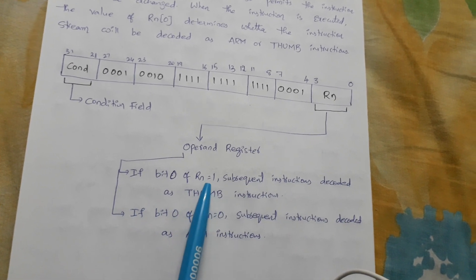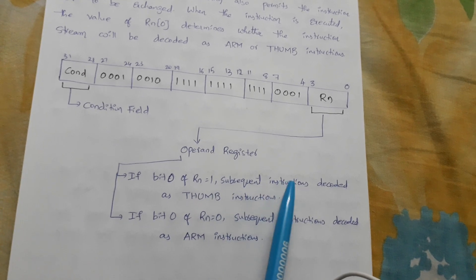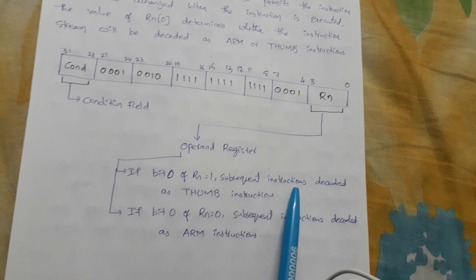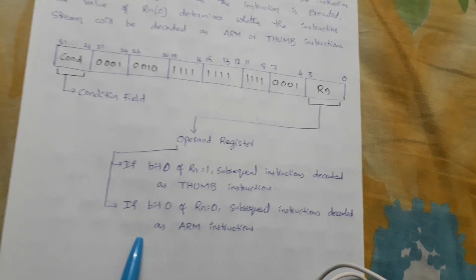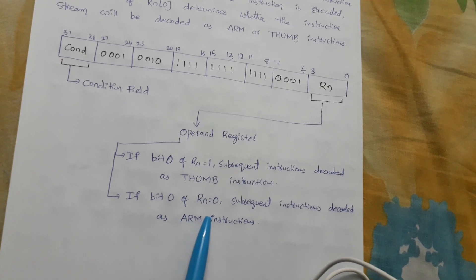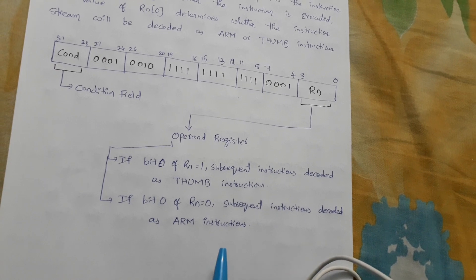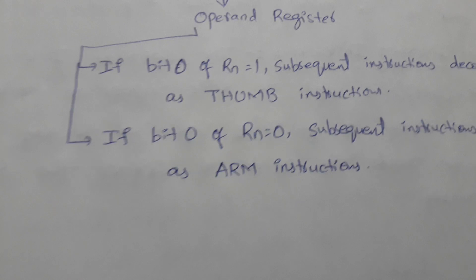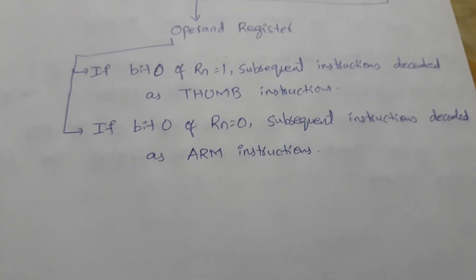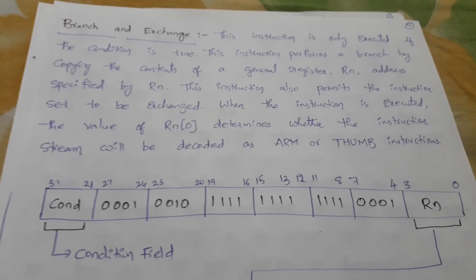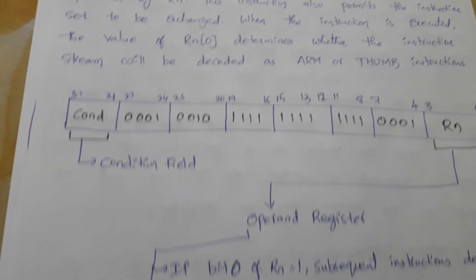If bit 0 of Rn equals 1, subsequent instructions are decoded as Thumb instructions. If bit 0 of Rn equals 0, subsequent instructions are decoded as ARM instructions. So if Rn bit 0 equals 1 it will be Thumb instructions; if Rn bit 0 equals 0 it is ARM instructions.